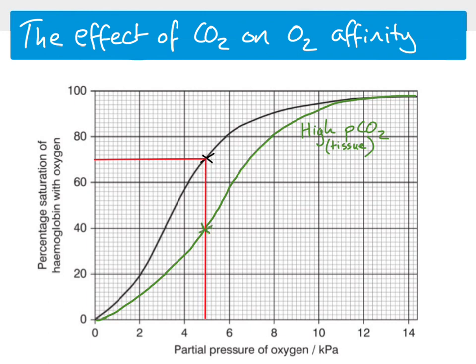So oxygen unloads because the partial pressure of oxygen has reduced, but it unloads even more because carbon dioxide is high in the respiring tissues. This means that in the respiring tissues, where oxygen is needed for aerobic respiration, the elevated CO₂ produced by that respiration causes even more oxygen to be released from hemoglobin — a very effective feedback mechanism.